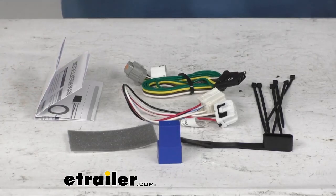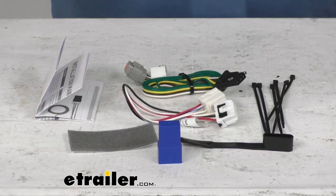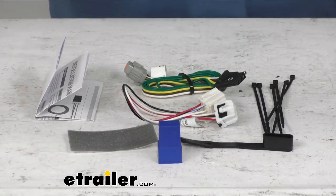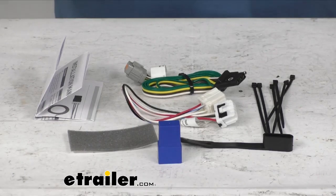Now this will provide a four-way flat trailer connector to the back of your vehicle to use your trailer signal lights. It is compatible with five-pole, six-pole, and seven-pole adapters which are sold separately.